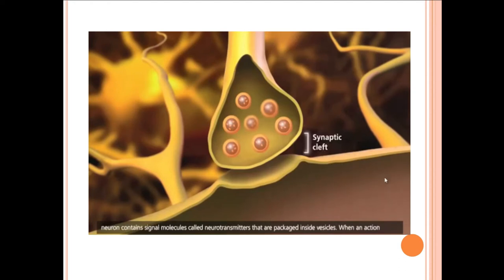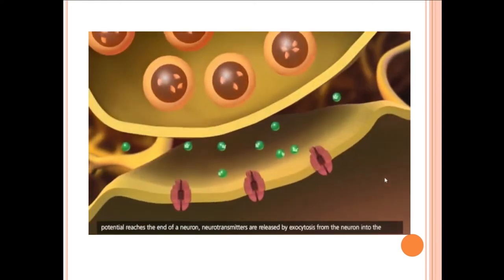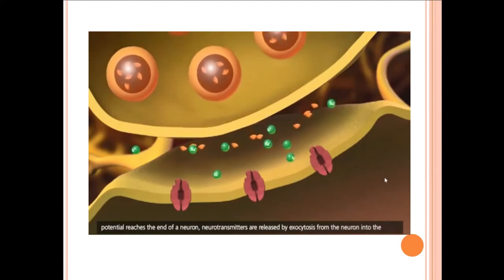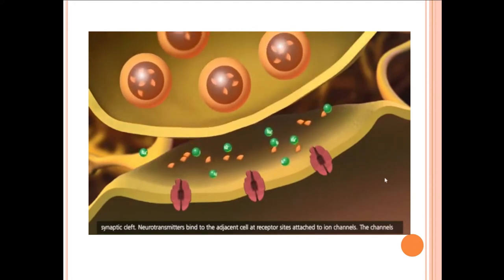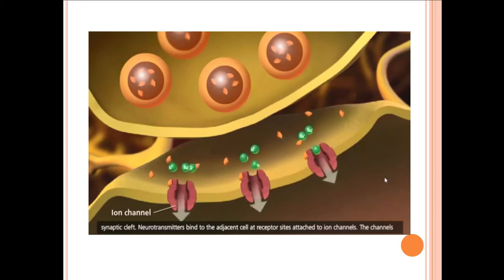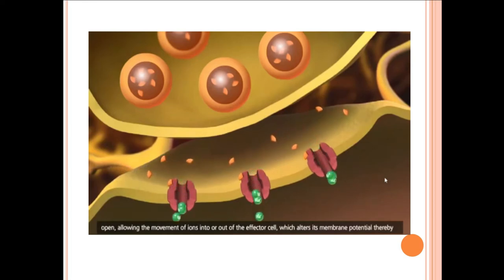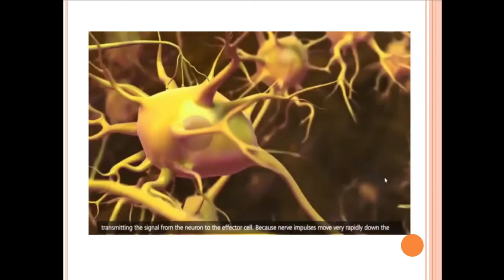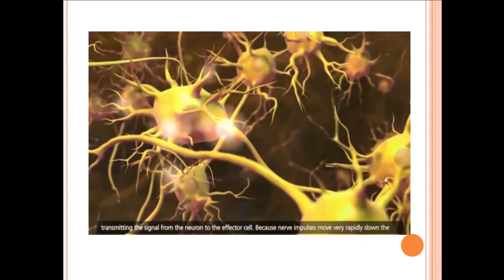The presynaptic neuron contains signal molecules called neurotransmitters that are packaged inside vesicles. When an action potential reaches the end of a neuron, neurotransmitters are released by exocytosis from the neuron into the synaptic cleft. Neurotransmitters bind to the adjacent cell at receptor sites attached to ion channels. The channels open, allowing movement of ions into or out of the effector cell, which alters its membrane potential, thereby transmitting the signal from the neuron to the effector cell.